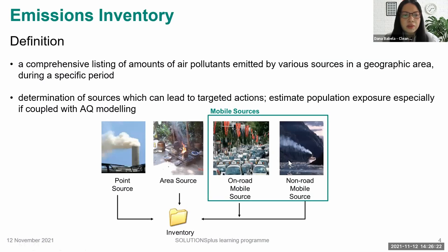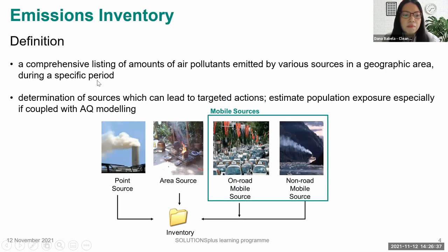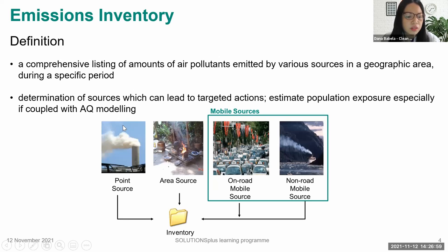For the introduction and recap, I'll go over this quickly since Sarah already discussed this. The EI is a comprehensive listing of amounts of air pollutants emitted by various sources in a geographic area during a specific period of time. We have a specific area and a specific period, so we need to know from what date the emissions inventory was developed, or what period the data were collected.